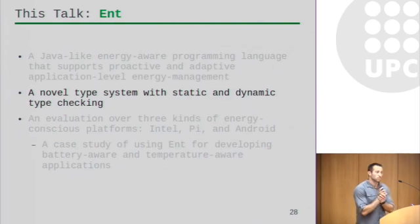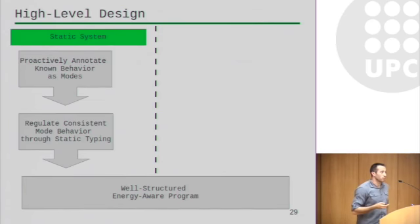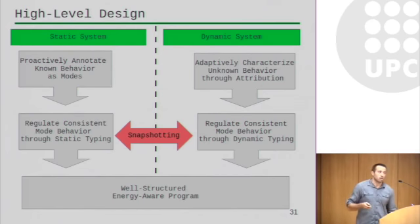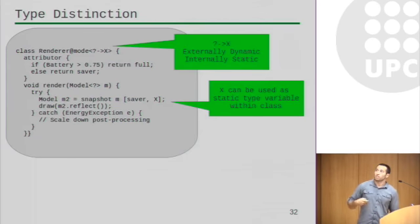So now I'm going to dig into some of the intricacies of the type system about how we actually get these abstractions. So we know statically that we can annotate modes and kind of regulate their behavior and end up with this well-structured energy-aware program. And we also know that we can dynamically categorize certain behavior and still check it just at runtime. Well, snapshot is the bridge in our language that bridges these two systems. And how does it do that? Well, the first thing is there's this idea of type distinction. Because an object must first be snapshot before it can be used or essentially receive a message.